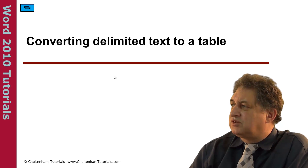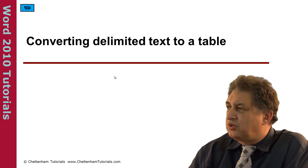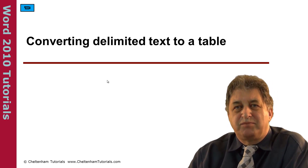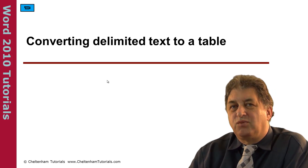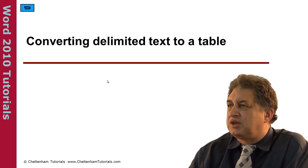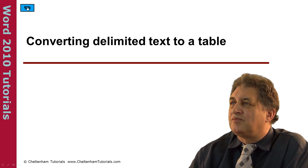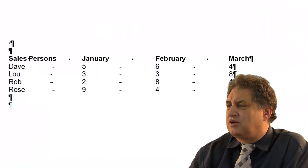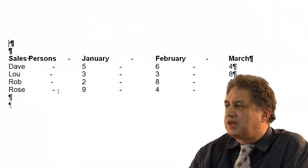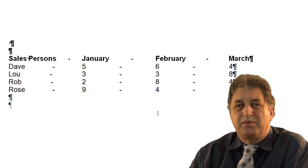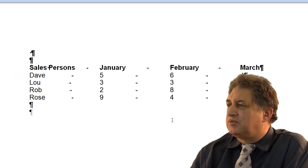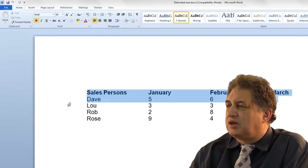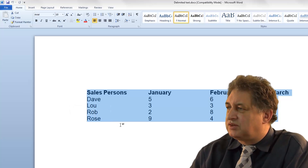Converting delimited text to a table. Delimited text is text that's been separated by a standard value — for instance, tab-delimited or comma-delimited, where each value is separated by a tab or comma. If I click the show/hide button, you can see there's a tab separating these values, so this is a tab-delimited file. At the moment there's no table — this is just delimited text.